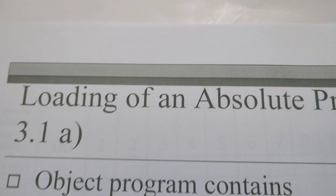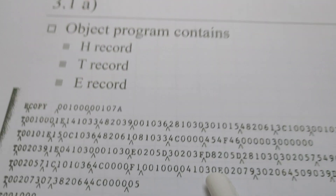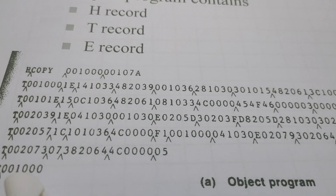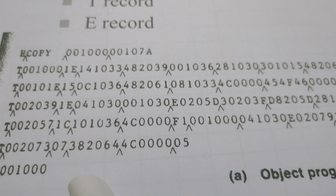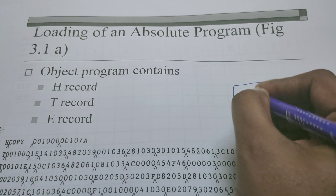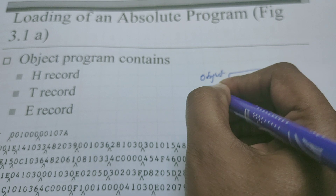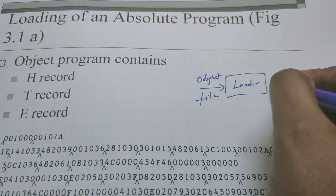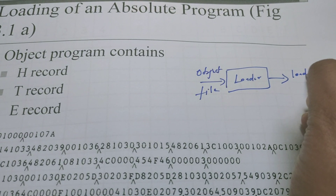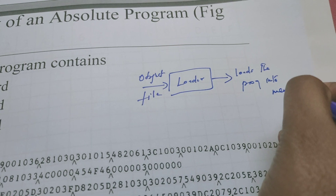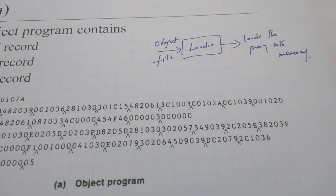Now we are going to understand what is an absolute loader with an example. This is a given object program. We know every object program majorly contains three types of records: header record, text record, and the end record. This object file is the input being given to the loader, and what the loader does is just load the program into the memory for execution.